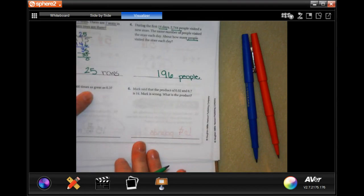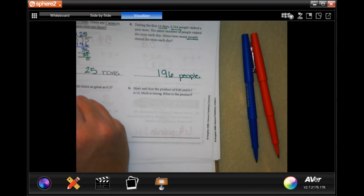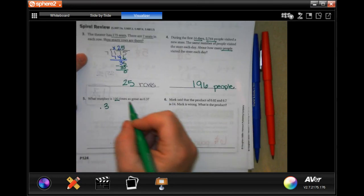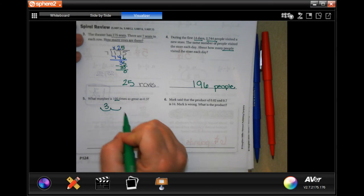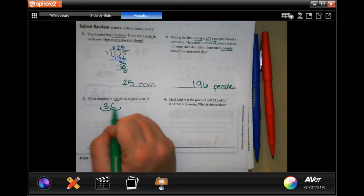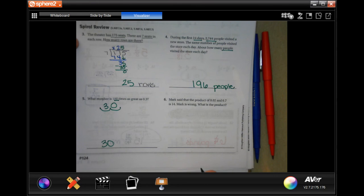What number is 100 times as great as 0.3? Well, 0.3. 100 has two zeros in it. So I have to move my decimal two times because 100 has two zeros. So 1, 2, well, I don't have a number there. So I'm going to 0. 30. Done.